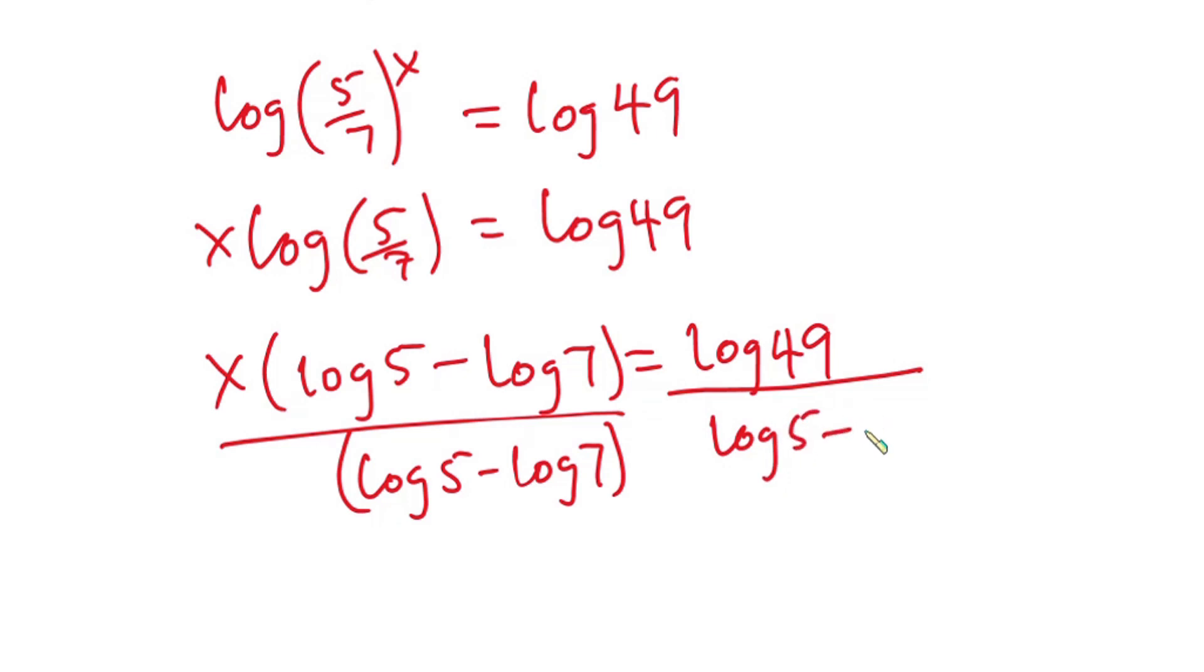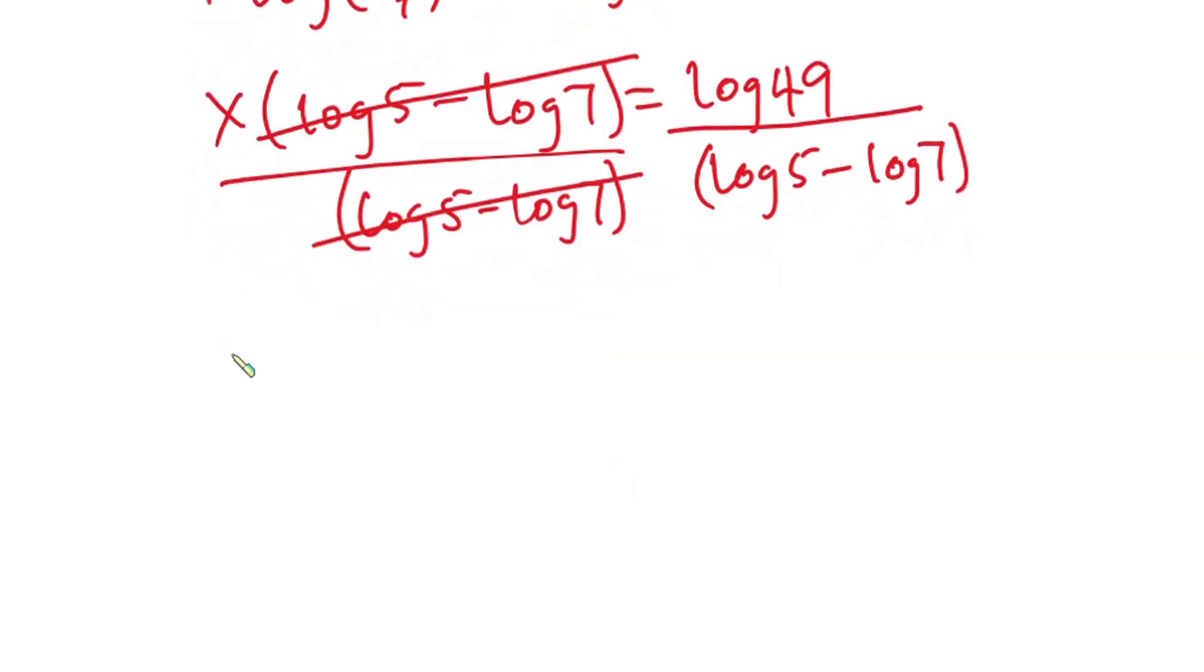So we have x equals log 49 over (log 5 minus log 7), and this could also be written as...